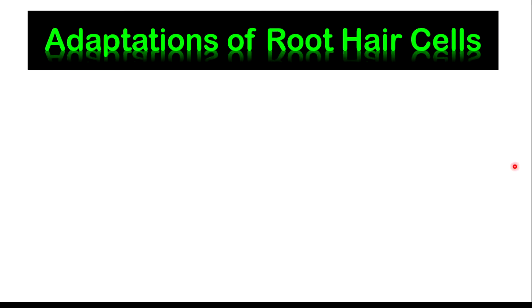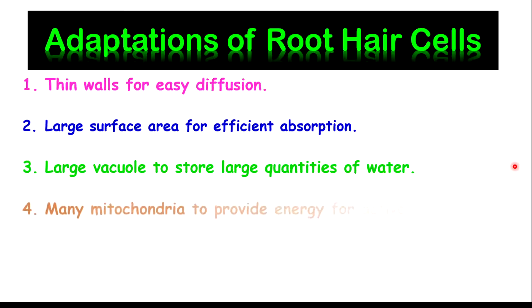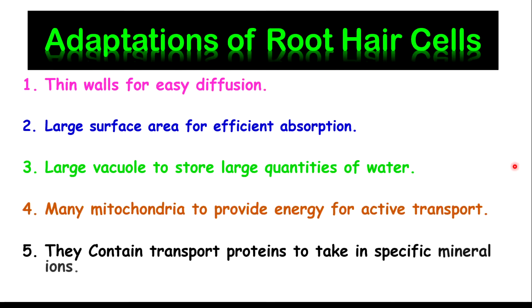Now let us look further and talk about some adaptations of the root hair cells. There are many mitochondria to provide energy for active transport. Lastly, they contain transport proteins to take in specific mineral ions.